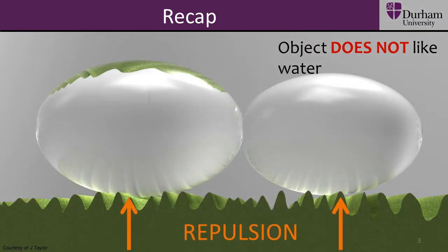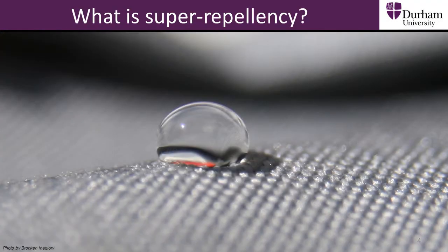In this section, we will see a special kind of surface which is super repellent towards water. What is super repellency? Repellent means that a surface repels and pushes water away. So if a surface is super repellent, it means that it will push the water away even more.